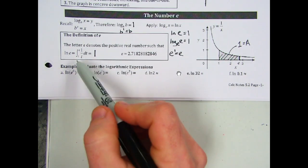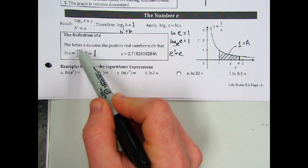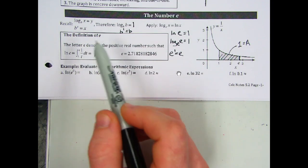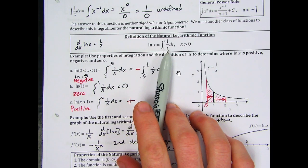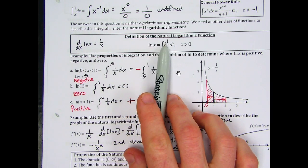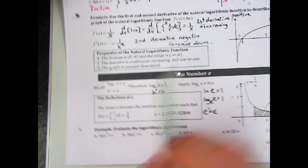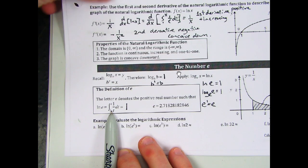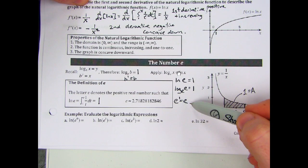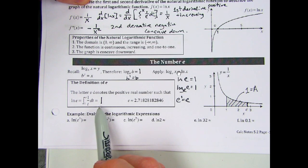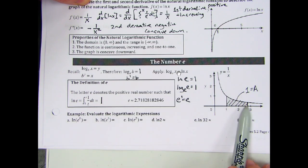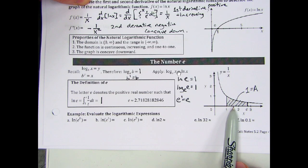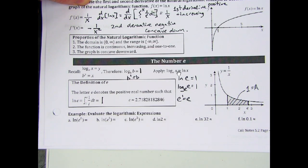This is the integral from 1 to e of 1 over t dt, which is just the definition of natural log. Since natural log of x is the integral from 1 to x, the natural log of e is the integral from 1 to e. Using our log rules we showed this equals 1 — it really is the area under the curve from 1 to e equaling 1. Now you understand what e means because you understand calculus.